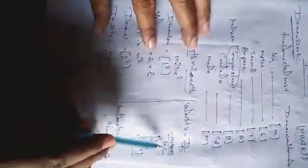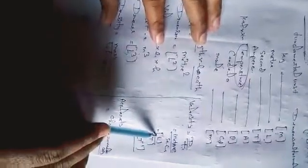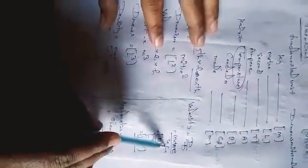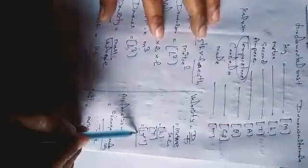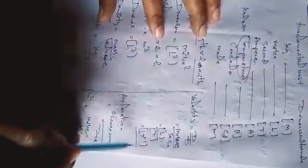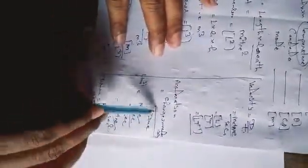Velocity is equal to distance upon time. The unit is meter per second. Meter is represented by L and second is represented by T, so the dimension formula of velocity is L T to the power minus 1. Similarly, acceleration is equal to change in velocity.